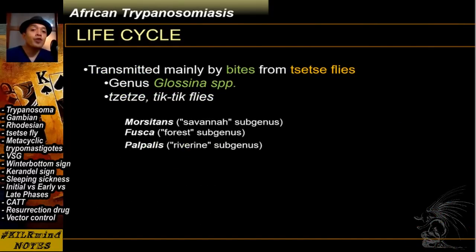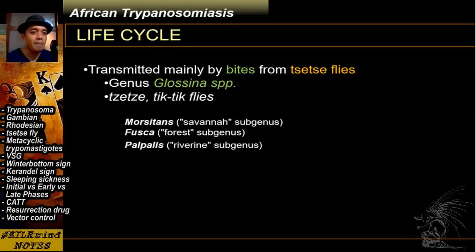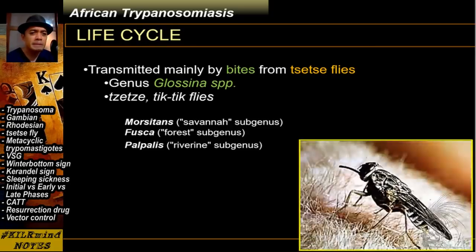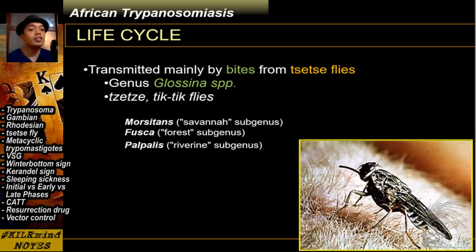The vector for African Trypanosomiasis is called the tsetse fly. You get the disease by the fly biting you — it is a biting fly of the genus Glossina. This particular fly bites during the daytime, and both males and females bite humans. The adults can grow up to around 0.5 to 1.5 centimeters long. The parasites mature in the salivary glands, and vertical transmission and accidental needle prick injuries can also transmit the parasite.